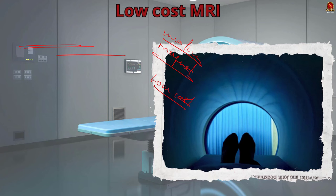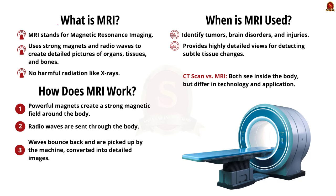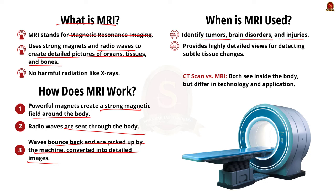What is an MRI? MRI stands for Magnetic Resonance Imaging. It is a machine that helps doctors see inside the body without surgery. It uses strong magnets and radio waves to create detailed pictures of organs, tissues, and bones. The MRI machine has powerful magnets that create a strong magnetic field around the body. It then sends radio waves through the body; these waves bounce back and are picked up by the machine, which turns them into pictures. Doctors use MRI machines to find problems like tumors, brain disorders, and injuries. MRI gives very detailed images helping doctors see small changes in tissues, and it is safe because it does not use harmful radiation.